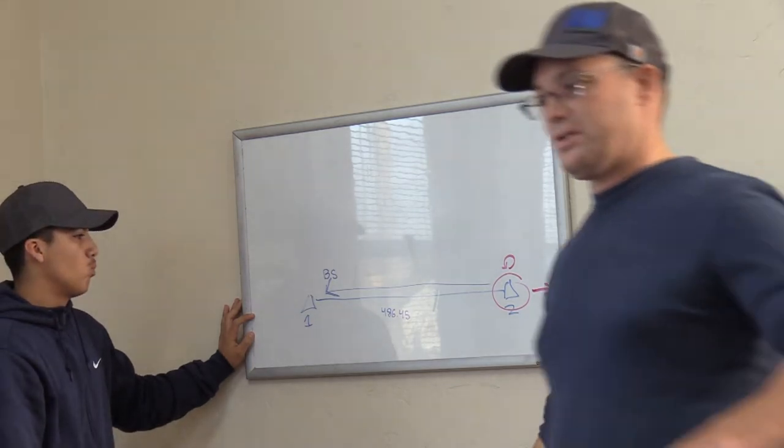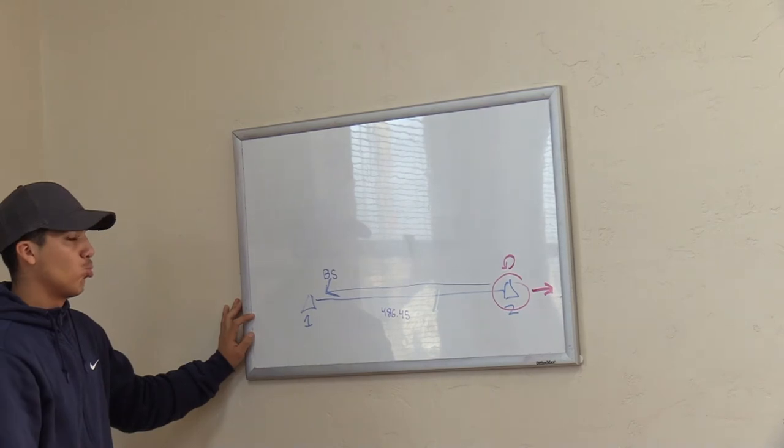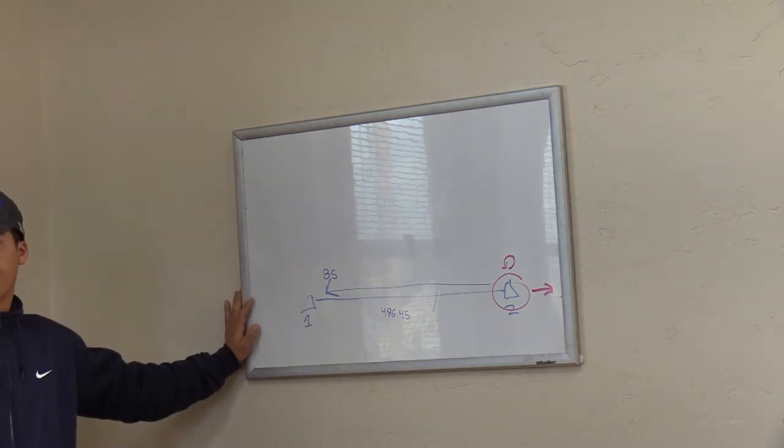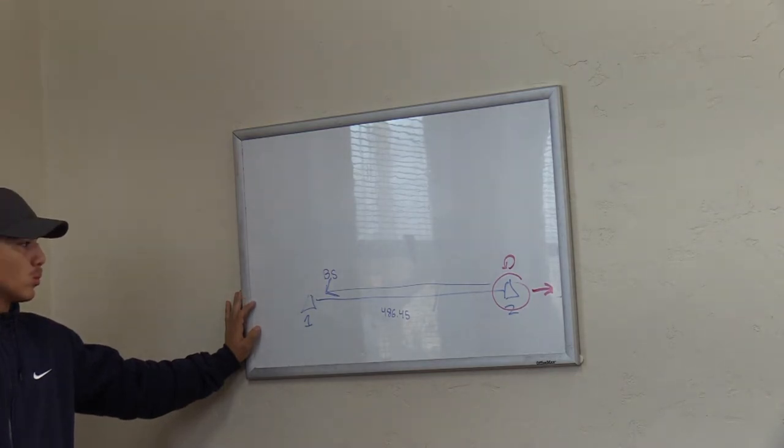Okay. So hang on real quick because Elena and Austin may not understand what we're talking about. So we set the total station on control point number two. We got it leveled. Hunter's point number one. We look at Hunter. We take our backsight. We get lined up, right? When I say invert the scope or plunge the scope, we do this. So we're not pointing at one now. We're pointing forward. Now, what I want you guys to understand is when we do that, essentially what that lets us do is we can extend that line out just like the extend function in AutoCAD, right? That's what plunging the scope does for you.